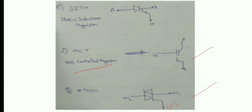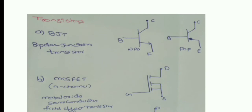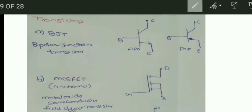Coming to transistors, the first one is the Bipolar Junction Transistor (BJT). There are two types: NPN and PNP, having terminals — base, collector, and emitter. Next is the N-channel MOSFET — Metal Oxide Semiconductor Field Effect Transistor — which has drain, source, and gate terminals.